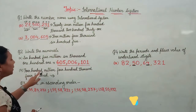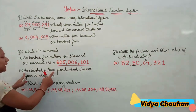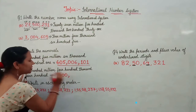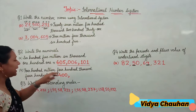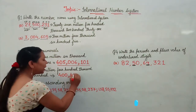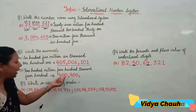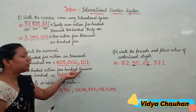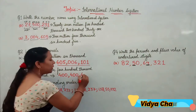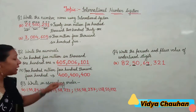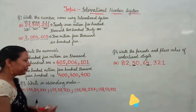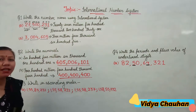Now the second part: 400 million, 400 thousand, 400. Which number is in the millions group? 400. So we write 400 as the millions group. Then 400,000 — in the thousands group we again have 400. Finally, the ones group is also 400. So the numeral is 400,400,400.